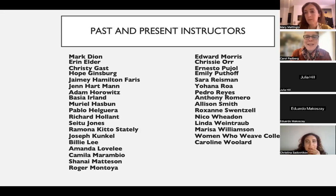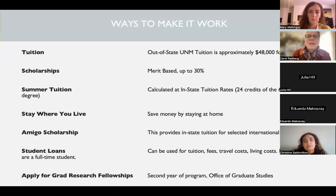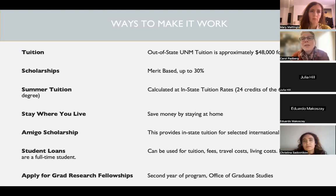You can put any questions in the chat and we'll look at those together. One of the most common and most necessary questions we hear from prospective students is: how can I make this work financially? Our program's entire out-of-state tuition and fees is approximately $48,000 for the 26 months of study. To help make this more accessible, we offer merit-based scholarships for up to about 30% of the cost, and everyone who applies is considered for one of these scholarships.